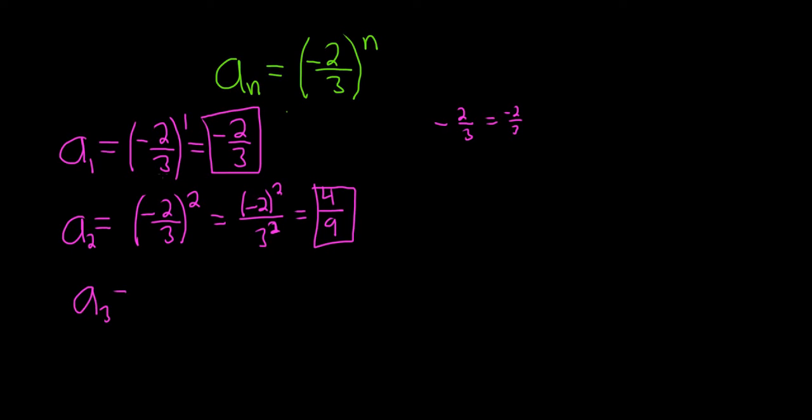For a_3, plugging in 3, we get negative 2 thirds cubed, which equals negative 2 cubed over 3 cubed. Whenever you have a negative number raised to an odd power, it's going to be negative. So this is negative 8 over 27, because 3 is odd.